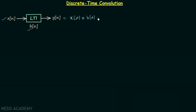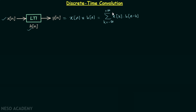To compute the convolution, we need to perform the summation of the product of two signals: the first is x[k] and the second is h[n-k]. We perform this summation from k equal to minus infinity to k equal to plus infinity.